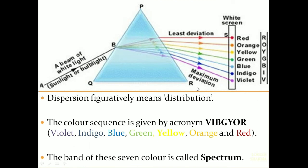The 7 constituent colors of white light can be given by the acronym VIBGYOR: V for violet, I for indigo, B for blue, G for green, Y for yellow, O for orange, and R for red. The band of these 7 colors is called the spectrum. Dispersion figuratively means distribution. We should remember that VIBGYOR is written from downward to upward, meaning violet is the most deviated light and red is the least deviated light.